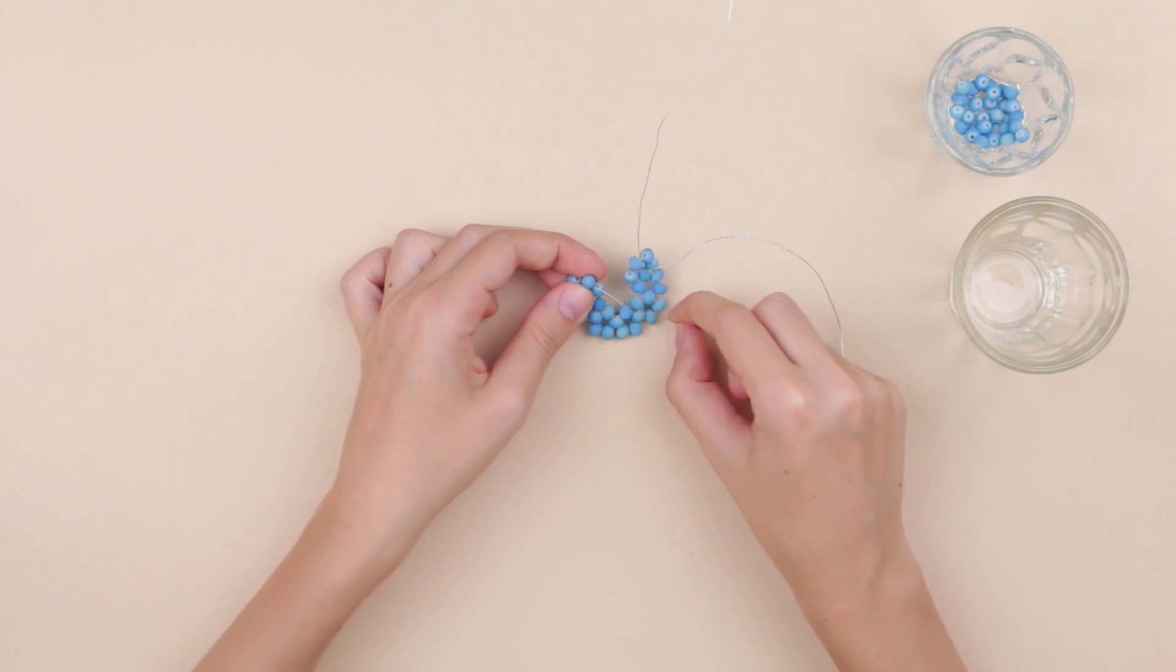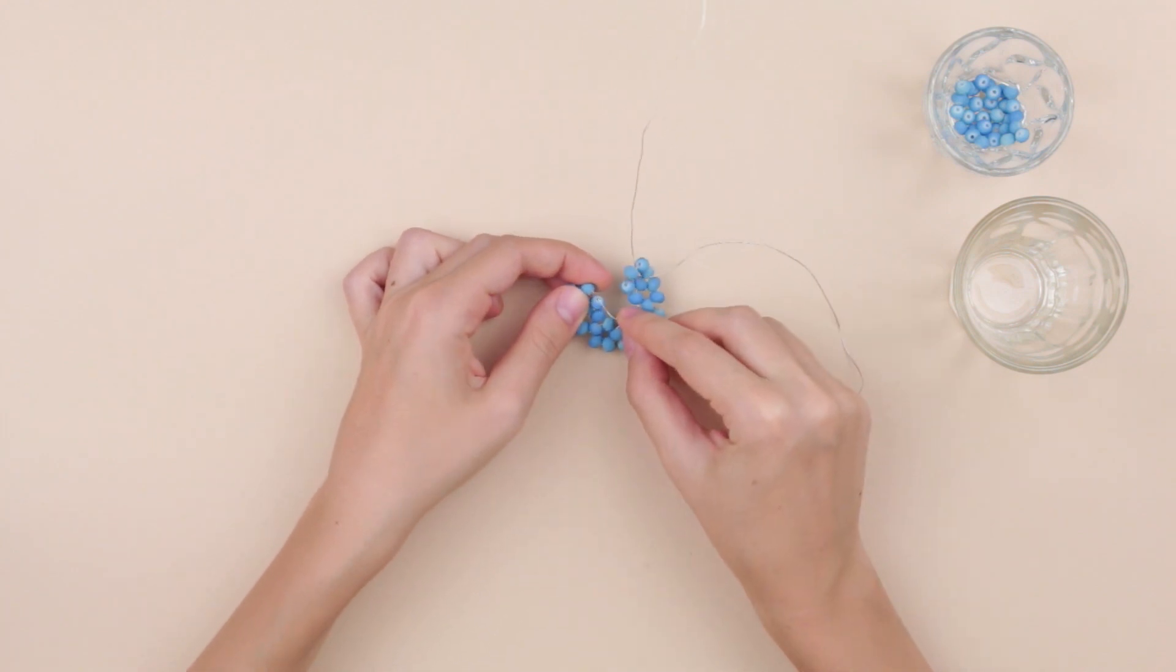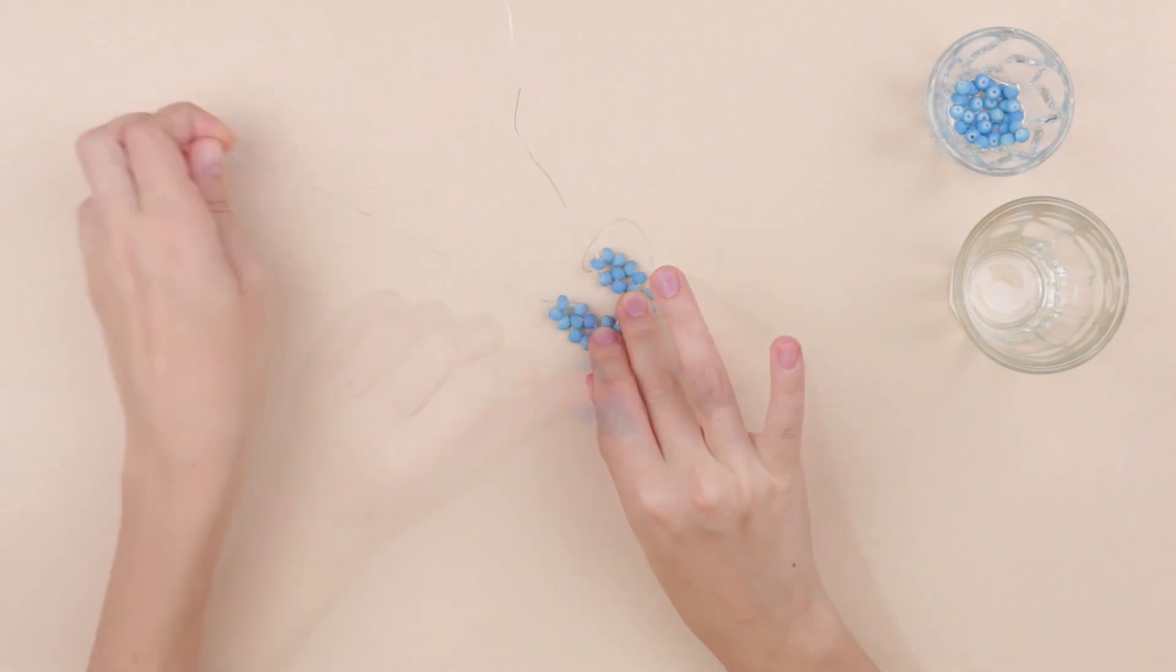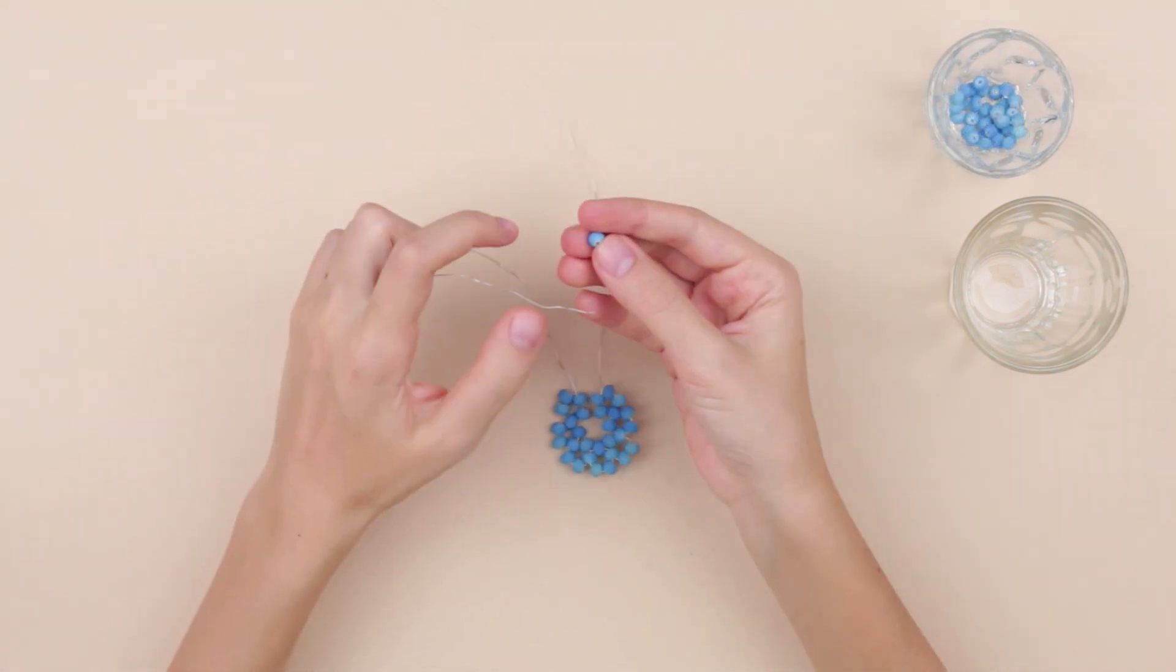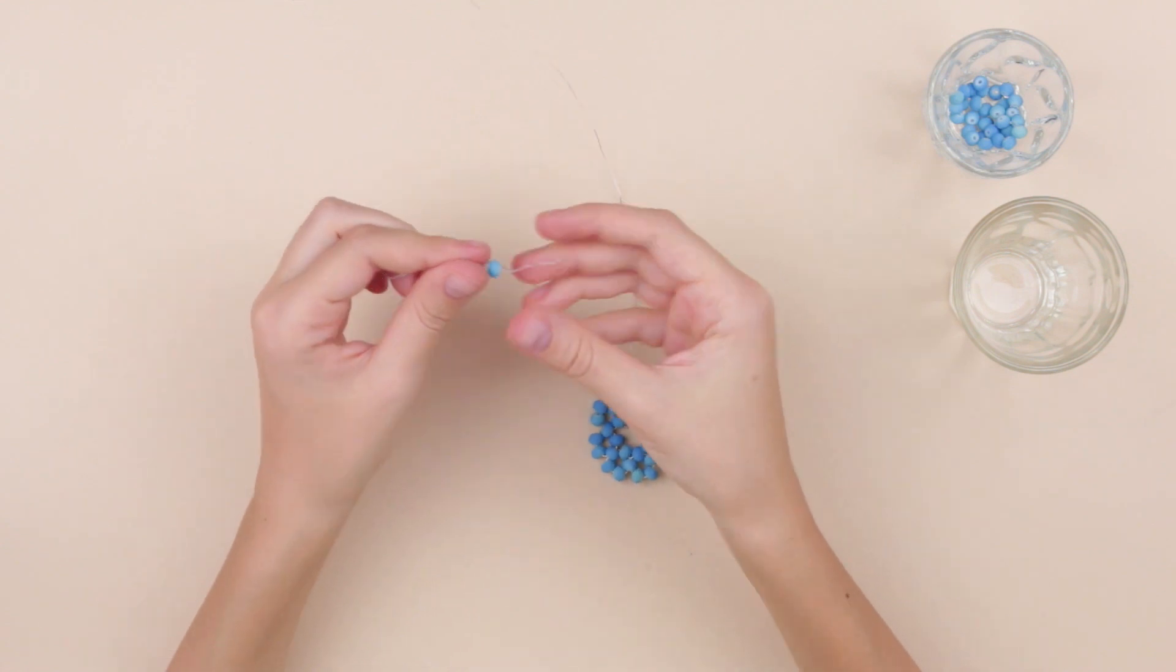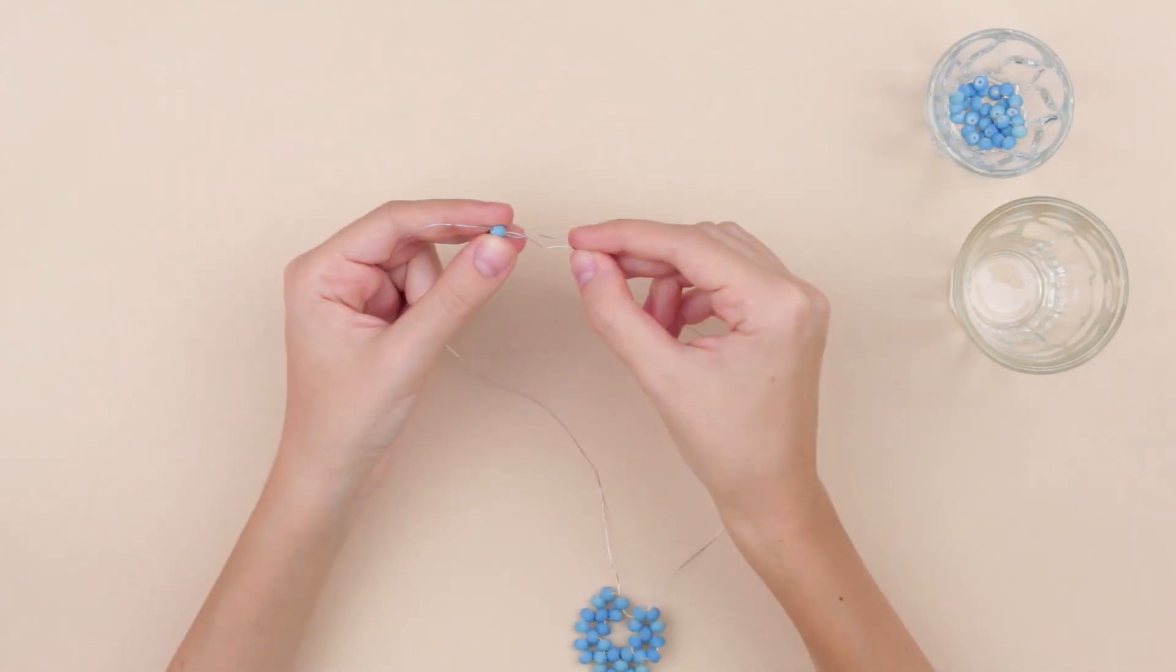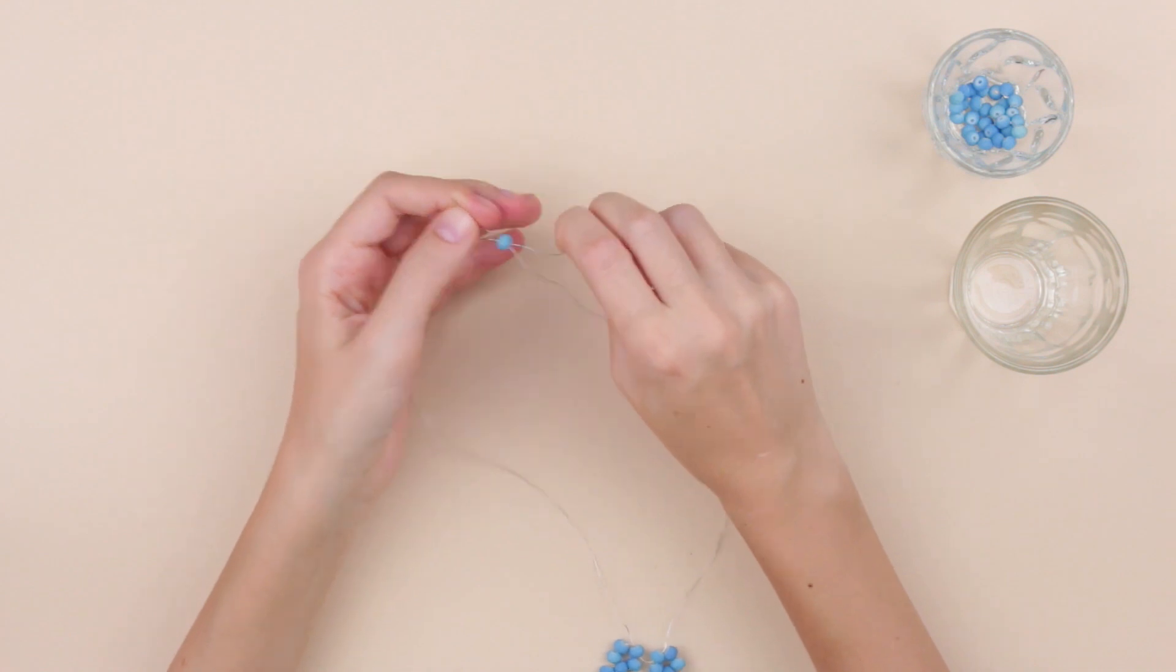Let's secure it. Take the left wire end and thread the closest left bead. Take another bead and pull the wire in from both sides. We already know how to do it. Pull up the wire and secure the element.